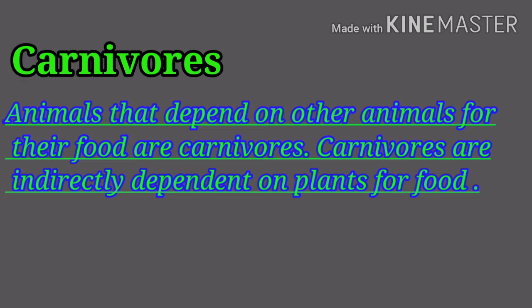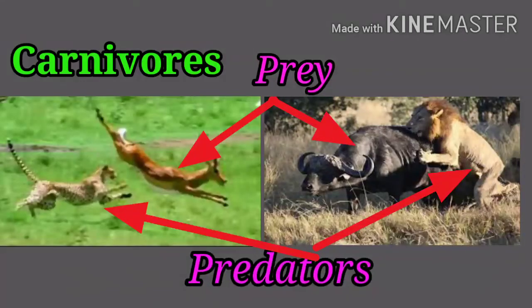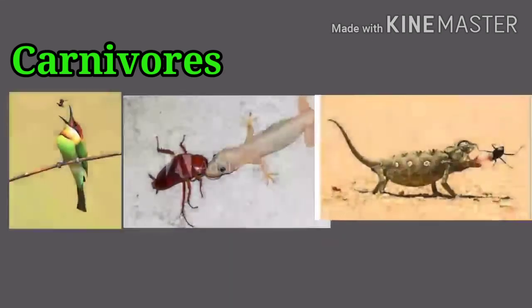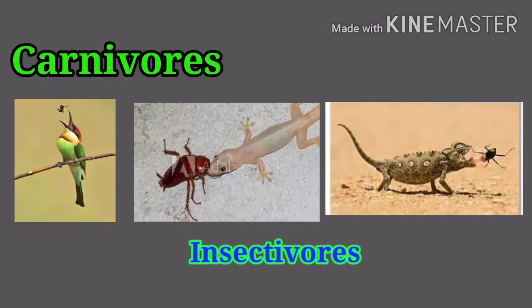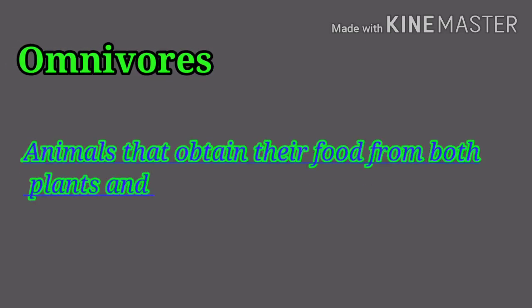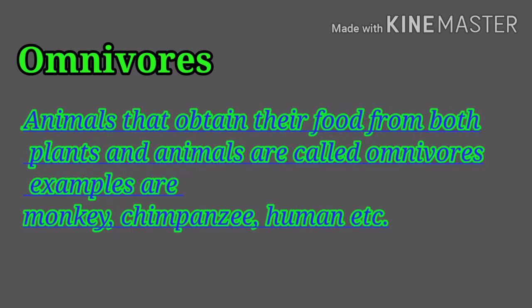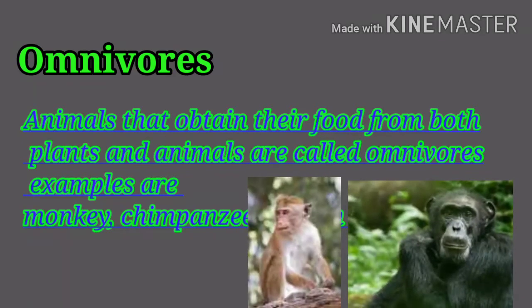Examples of carnivores include animals that feed on herbivores, called predators, and animals that feed on insects, called insectivores. Omnivores are animals that obtain their food from both plants and animals. Examples are monkey, chimpanzee, human, etc.